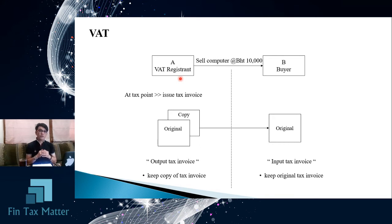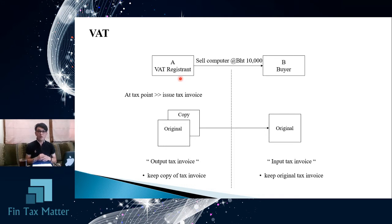At this tax point, A is required to issue the tax invoice and give it to B as evidence. B will use this tax invoice to prove the amount of input tax they have already paid to the revenue department via A, who has the duty to collect VAT from the buyer. A must prepare at least two copies of the tax invoice: the original and a copy. The original tax invoice goes to B because B needs it to claim input tax — the document must be the original, not a copy.